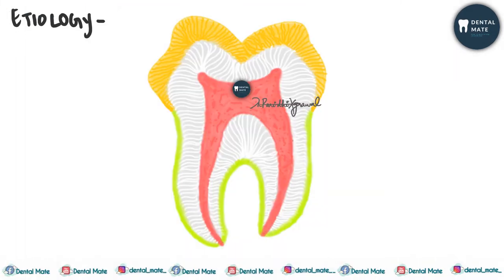If we talk about the etiology, the main cause of dentine hypersensitivity is gingival recession. Because of gingival recession, the root surfaces are exposed, there is loss of cementum and the smear layer of the root, and this causes tooth wear. Other causes could be long-term trauma, excessive forceful brushing, or abrasive toothpaste — any cause which leads to exposure of the dentine surface.